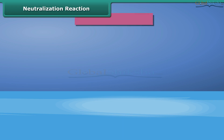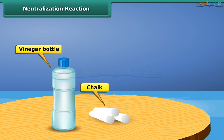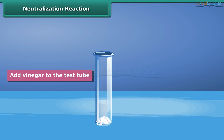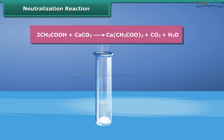Let us do an activity to understand neutralization reaction. Materials needed are a piece of chalk, vinegar, and a test tube. Drop some crushed chalk into the test tube and add vinegar. The chalk reacts with the vinegar, and bubbles of carbon dioxide come out. A white solid, calcium acetate, is formed. Chalk is calcium carbonate and vinegar is acetic acid in water. When they react, carbon dioxide, water, and calcium acetate are formed. Thus, an acid reacts with a base to form salt.